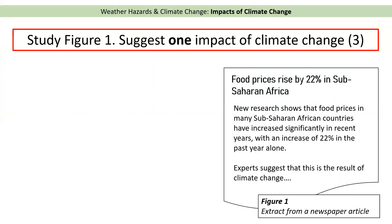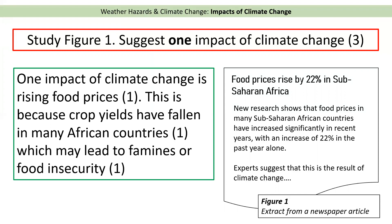Pause the video now, do this in your head or on paper, then restart when you're done. Here is a model answer: the newspaper article was talking about food prices going up, so one impact of climate change is rising food prices — referring to the source. This is because crop yields have fallen in many African countries. The amount of yield is the amount of crops you can grow per area. This may lead to famines or food insecurity, as a lack of crops could lead to a lack of food in those countries.